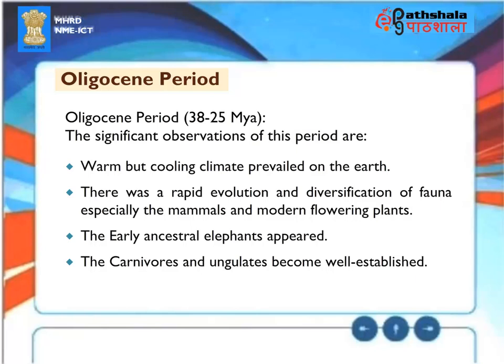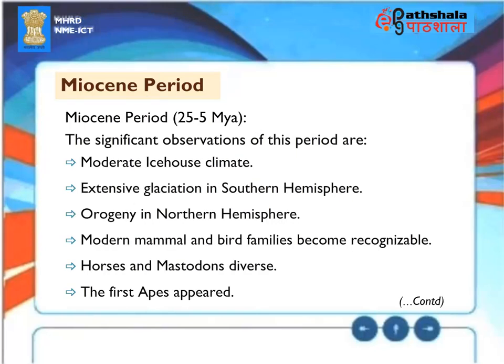The Oligocene period (38 to 25 Mya): warm but cooling climate prevailed on Earth, rapid evolution and diversification of fauna — especially mammals and modern flowering plants. Early ancestor elephants appeared, and carnivores and ungulates became well established.